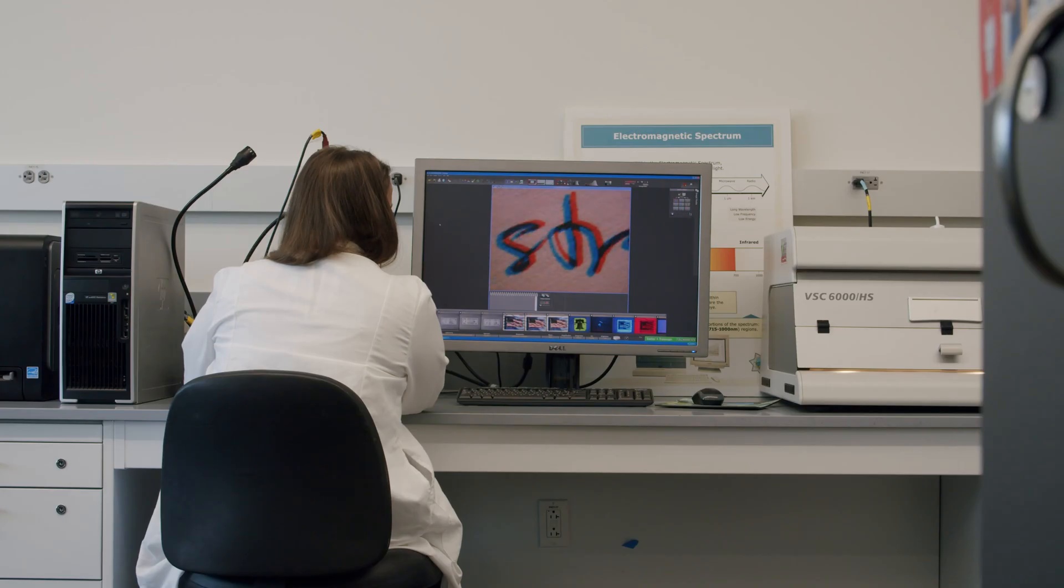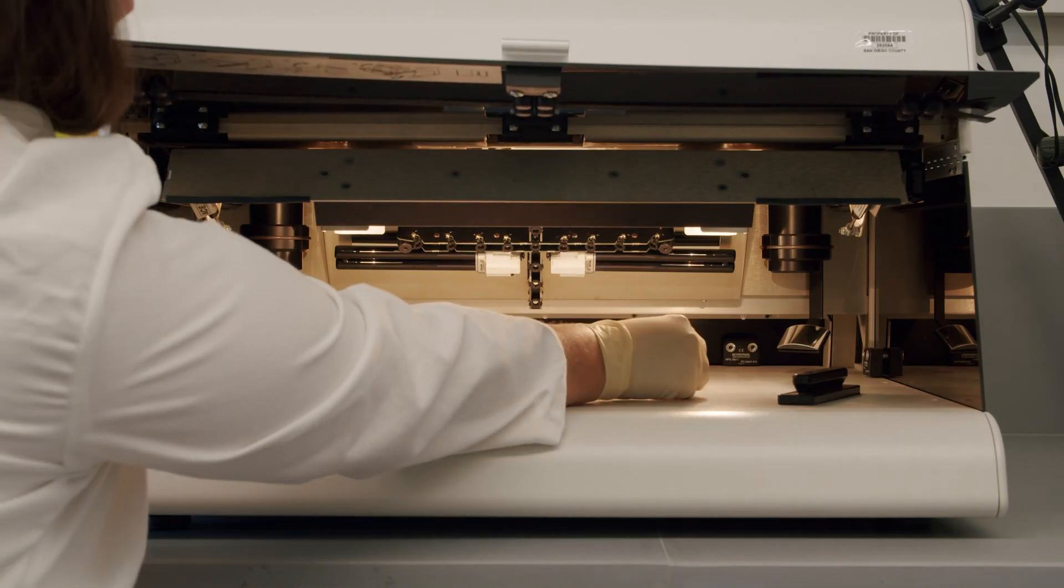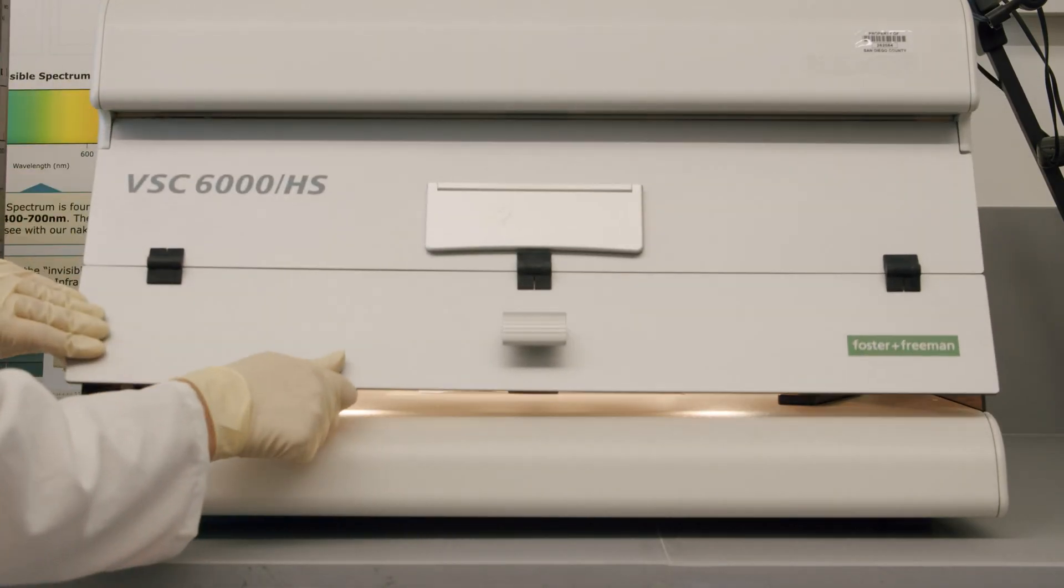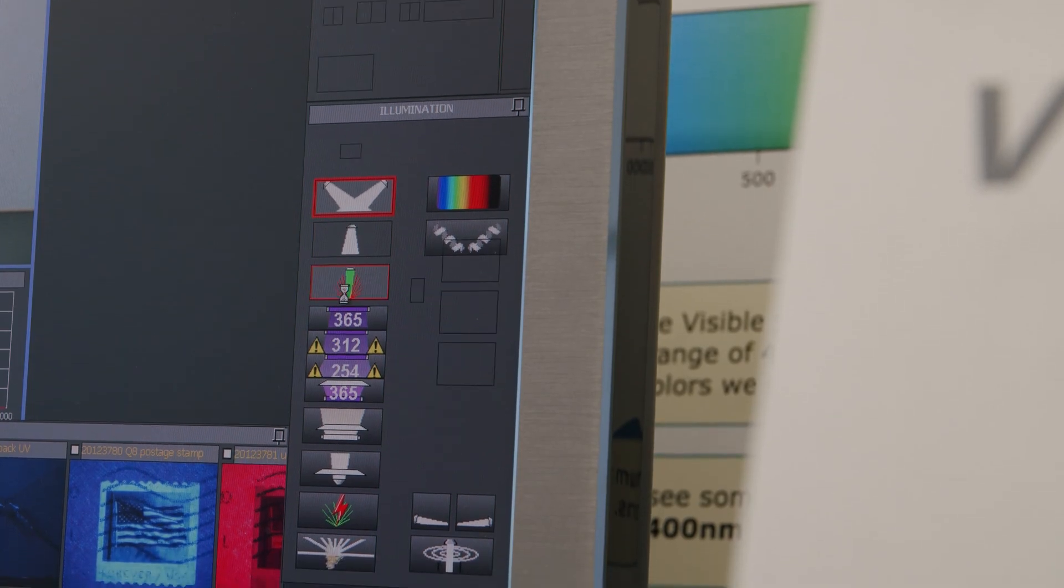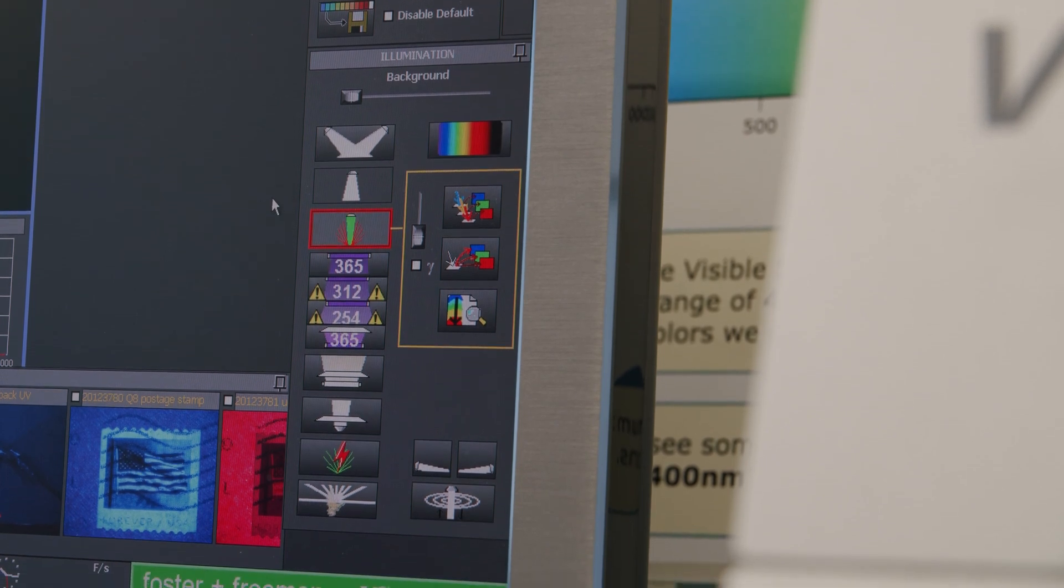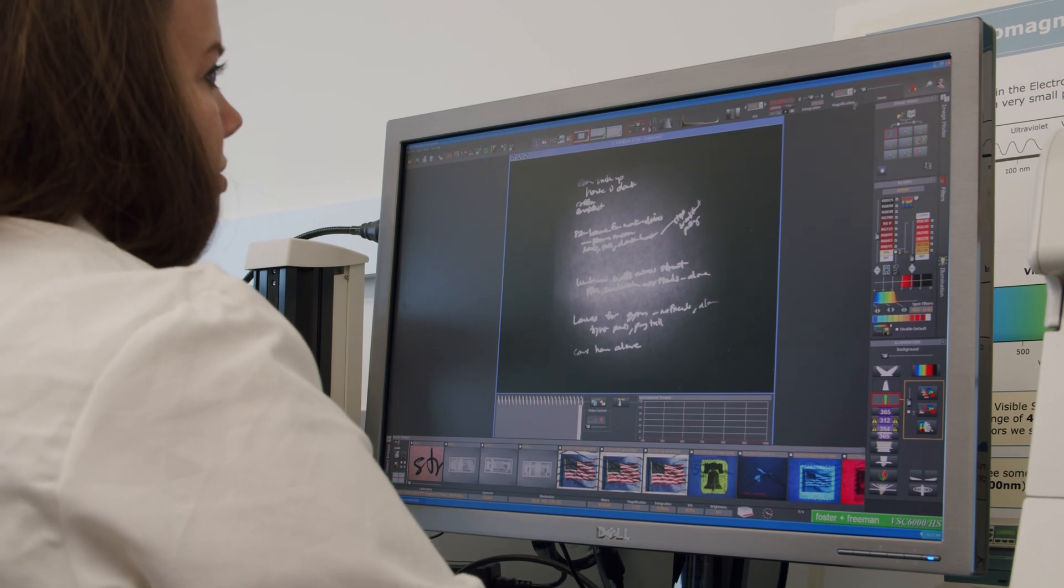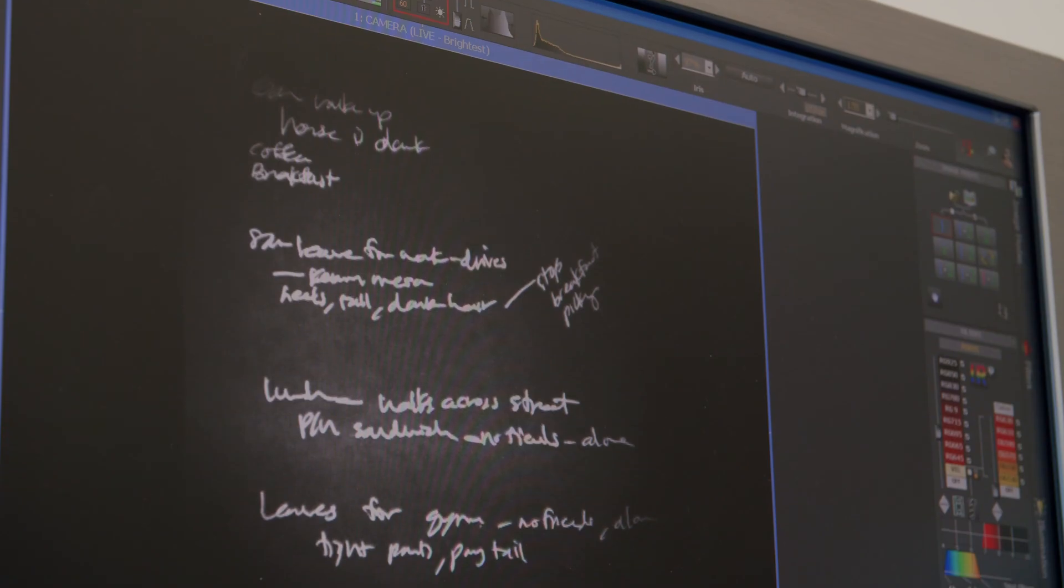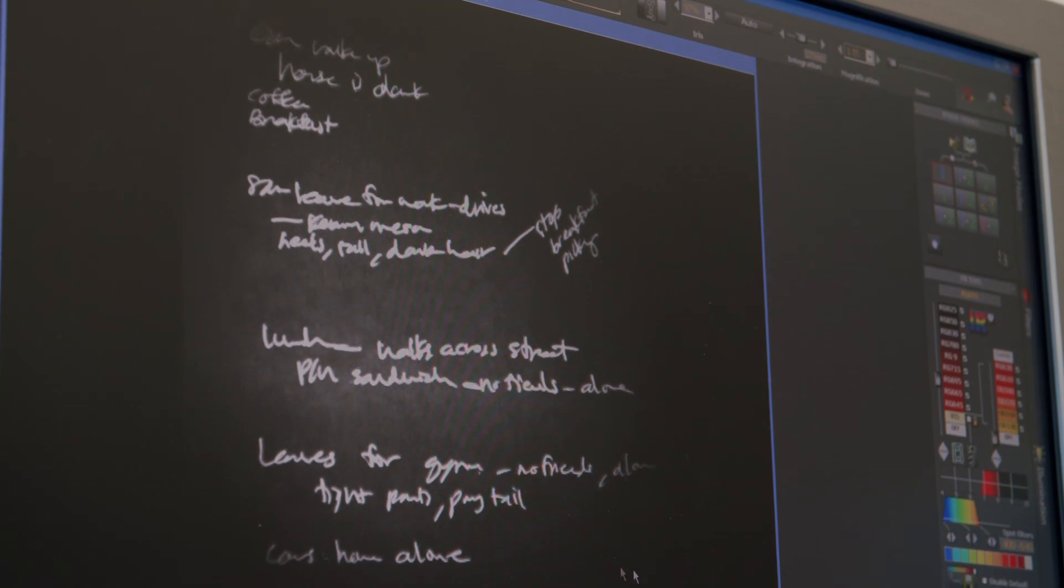We can look for things using an instrument called the Video Spectral Comparator, and this instrument uses different filters and radiations of light and light sources to look at things outside of the visible spectrum. With the VSC, we can see into infrared and ultraviolet light and look at things such as security features on documents. We can differentiate inks to see if this document was written with the same kind of ink or if two different inks were used.